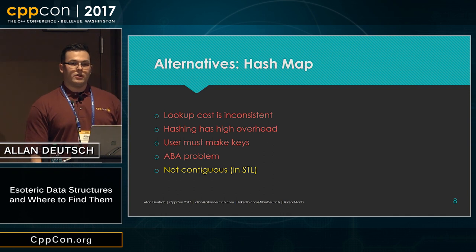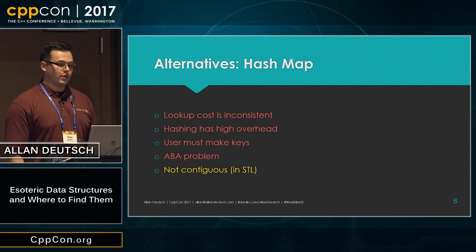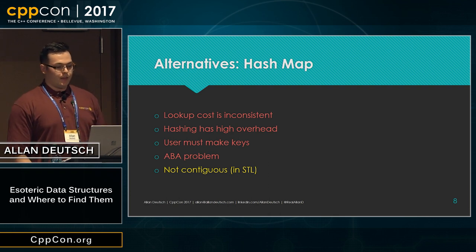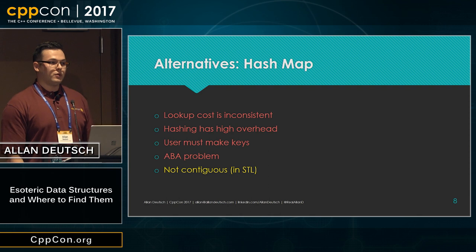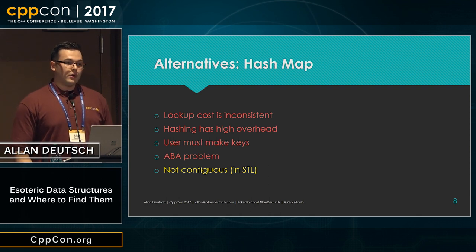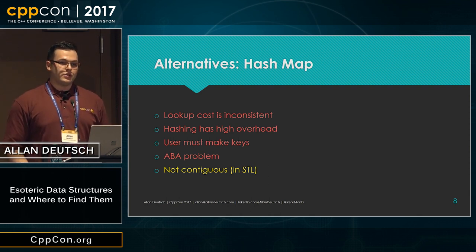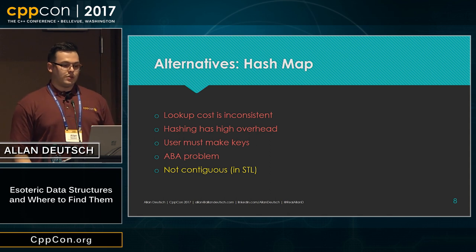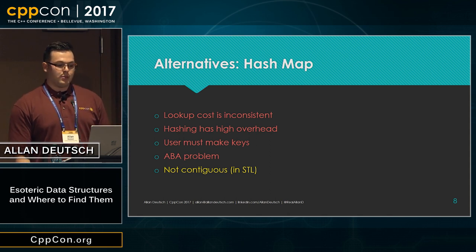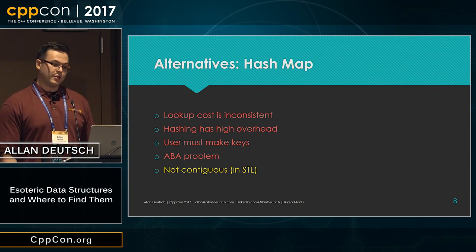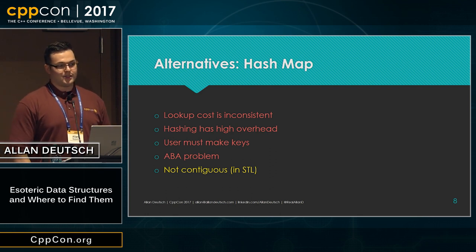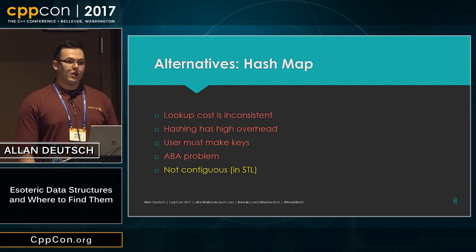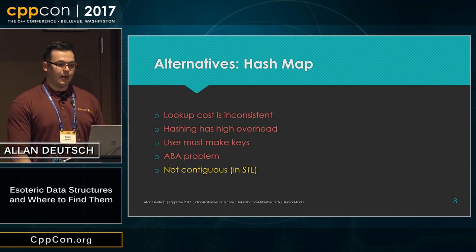One of the common alternatives is using a hash map, but the lookup costs are inconsistent due to both hashing and probing, and the hashing has a high overhead, which is also undesirable. In many cases you might not care what the unique key is, just that it's unique — whereas in a hash map you have to create your key, but a slot map gives it to you. Hash maps are also prone to ABA problems, and at least in the STL for C++ users, it's not contiguous. So there are a lot of undesirable characteristics for the types of problems that a slot map solves.